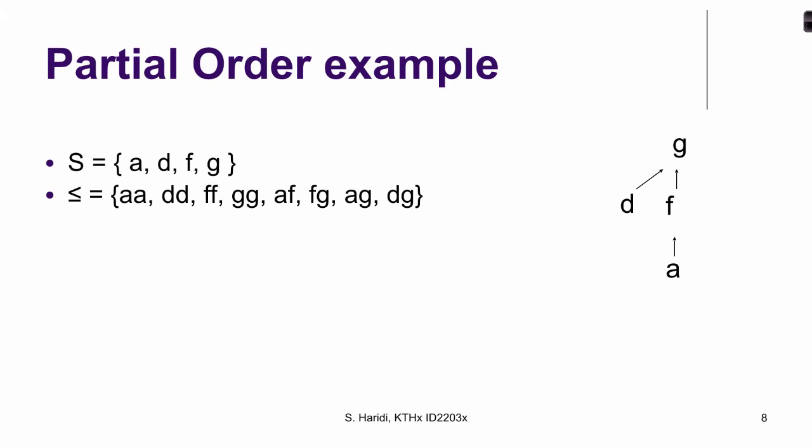Here's an example of a partial order. We have a set A, D, F, and G. We have the partial order consisting of this set. First of all, we have to satisfy reflexivity. So that's what we did here. Every element is related to itself. And then we have A is before F. F is before G. A is before G because of transitivity.